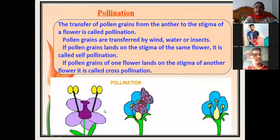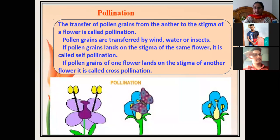There are different modes of cross-pollination. Wind, water, and animals are all factors. If pollination is taking place by honeybees or insects, it is called entomophily. If it is taking place by water, it is called hydrophily. If it is taking place by air, it is called anemophily. If it is taking place by animals, it is called zoophily.